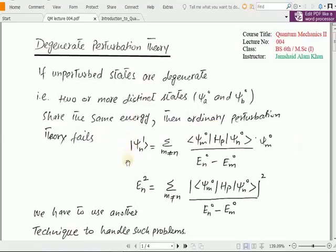Then the ordinary perturbation theory fails. We learned in the previous lecture how to write first order correction in wave function and second order correction in energy. These are the two equations, but the problem here is that if the two distinct states ψ_a^0 and ψ_b^0 share the same energy, then these two equations will blow up and the ordinary perturbation theory fails.